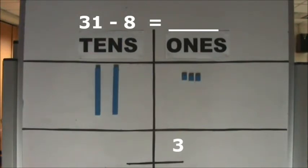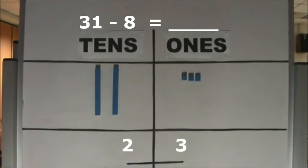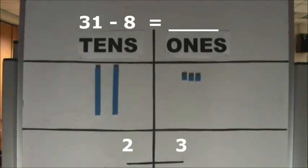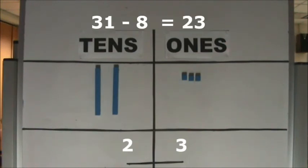How many tens do we have left? We have 2 tens left. 2 tens and 3 ones make 23. When we subtract 8 from 31, we get 23. 31 minus 8 equals 23.